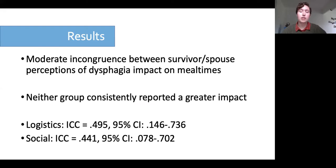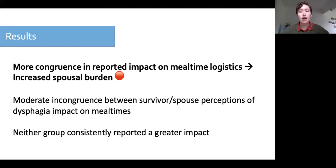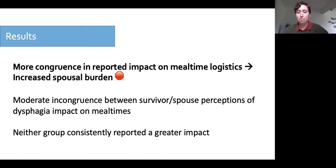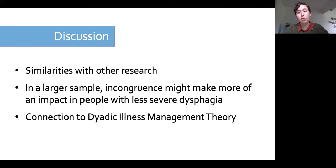Results showed moderate incongruence between survivors and spouses in perceptions of dysphagia's impact on logistic and social aspects of mealtimes, with neither group consistently reporting greater impact. The hypothesis was not supported — higher incongruence did not correlate with higher caregiver burden. In fact, a significant negative relationship existed between burden and mealtime logistic congruence, meaning increased burden was associated with increased agreement on the logistic impact of dysphagia. Burden was not associated with social mealtime congruence.